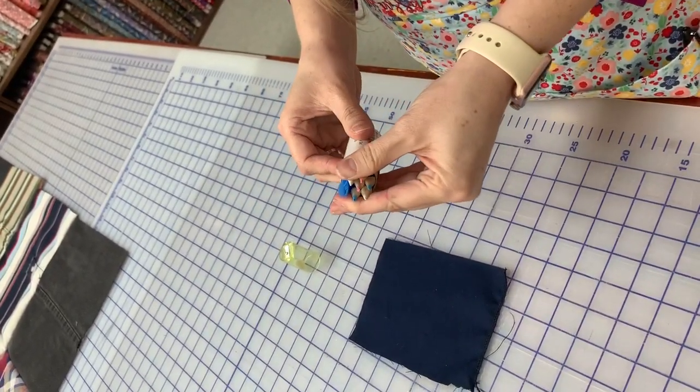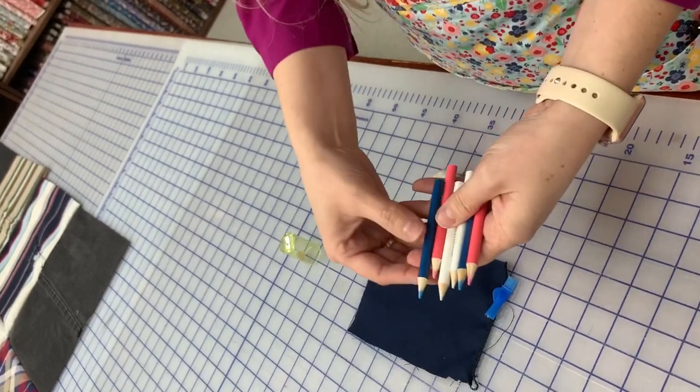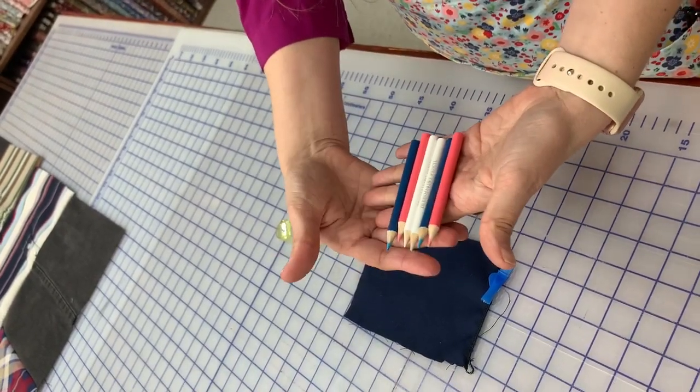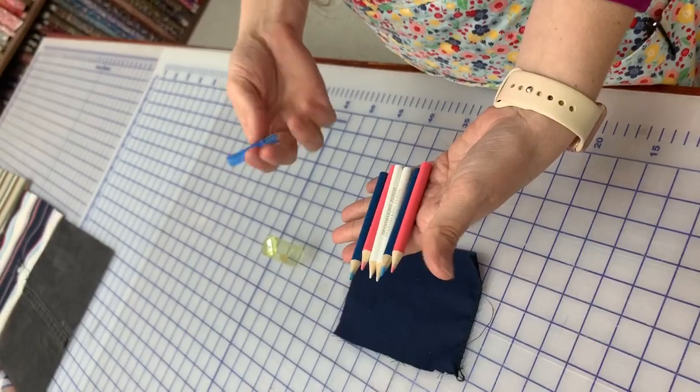And then also comes with two blue, two pink, and two white pencils, depending on the fabric you're trying to mark.